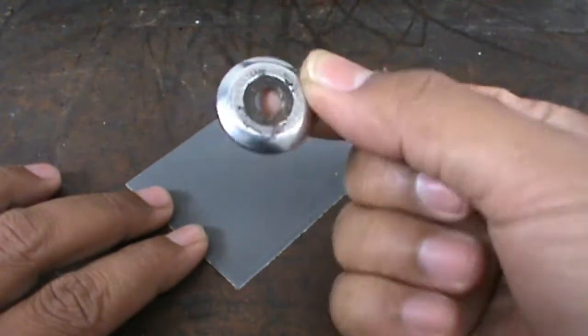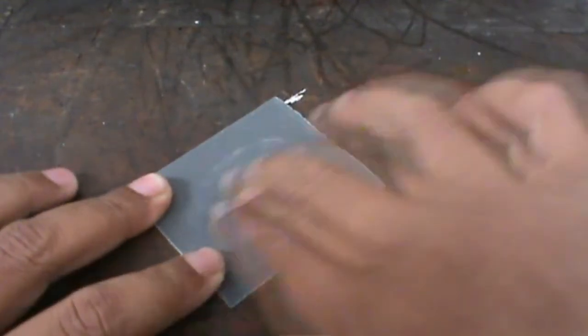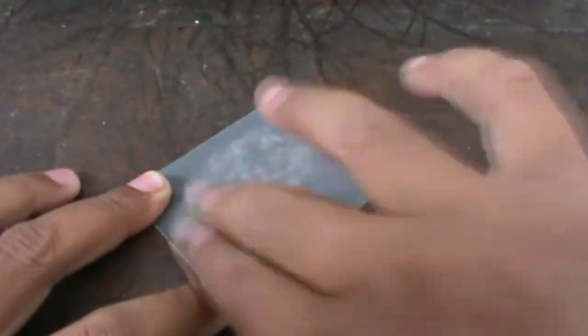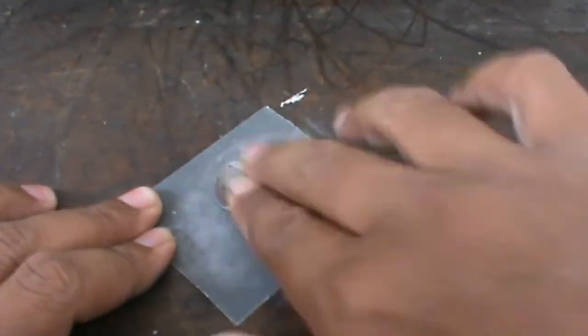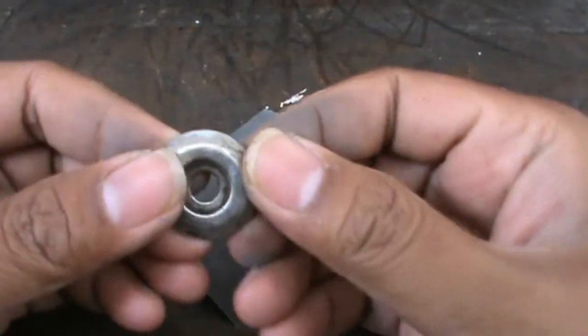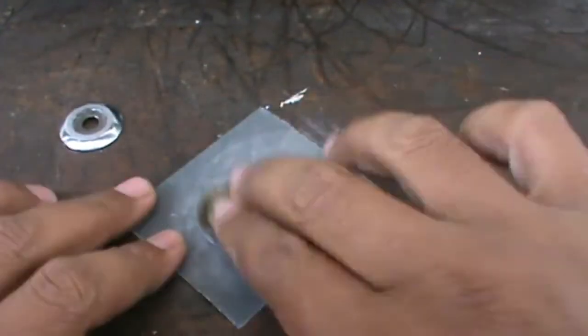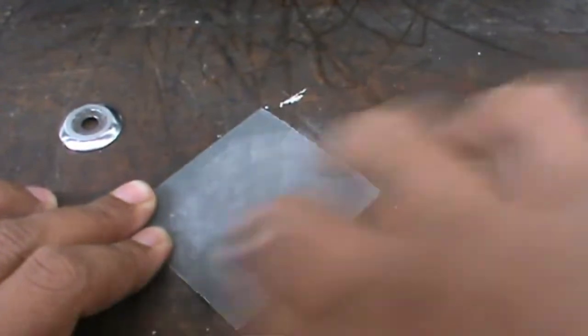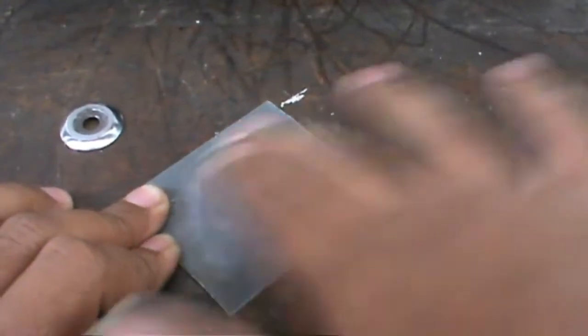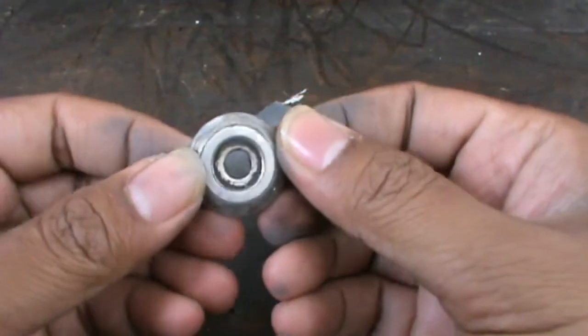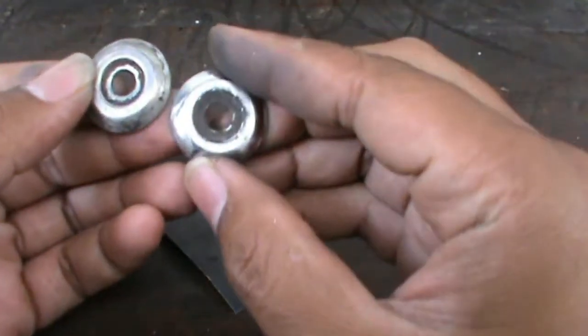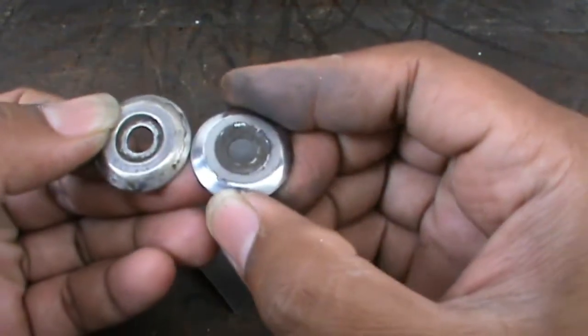Jadi ini permukaan yang kurang rata saya amplas. Kecar yang kedua. Oke, untuk kedua kecar ini kelihatannya sudah cukup rata.